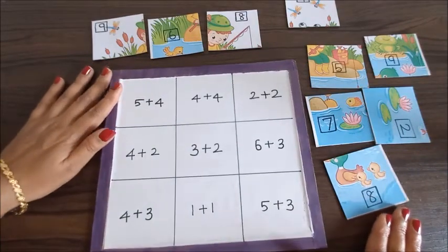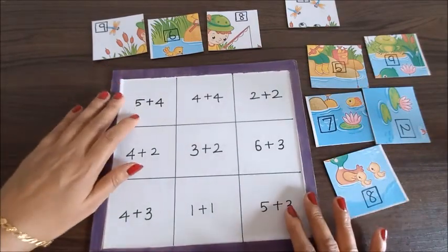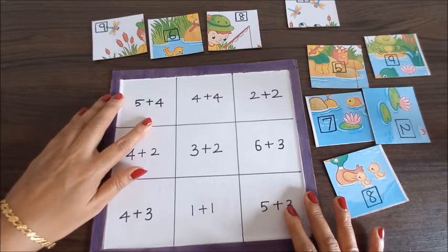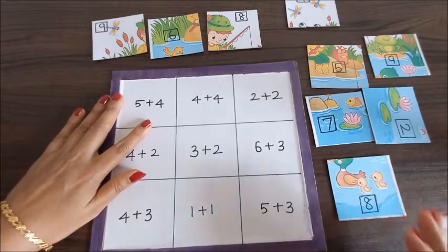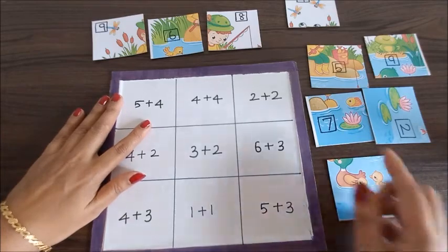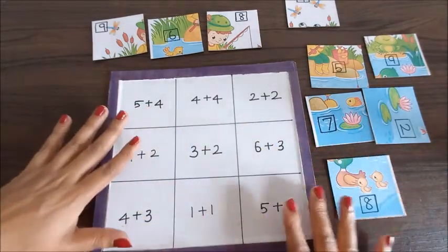This is about the rote memory of the child. When we ask 5 plus 4, the child should answer immediately 9, or he can always add up and put up the picture. This addition makes up a jigsaw puzzle, so let's go ahead and start.